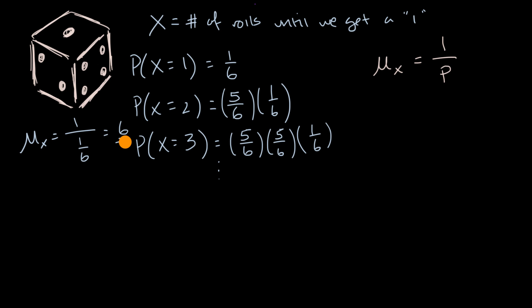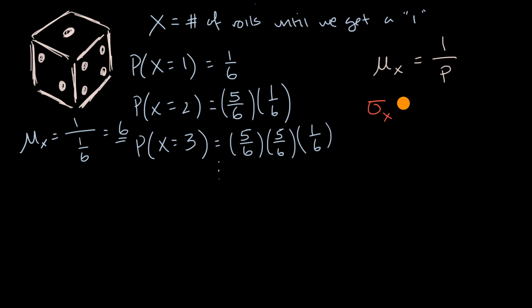On average, you would have six trials until you get a one. Now, another question is: what's a measure of the spread of a geometric random variable? The standard deviation of a geometric random variable is the mean times the square root of one minus p, or equivalently the square root of (one minus p) over p.